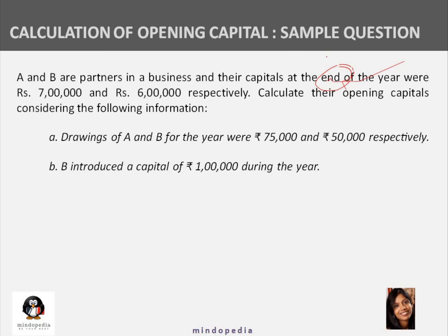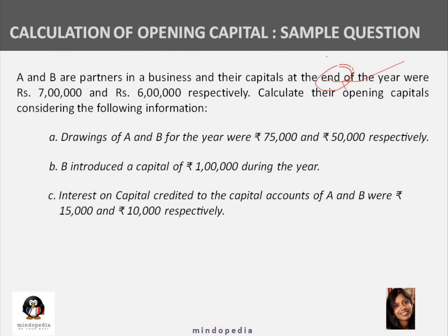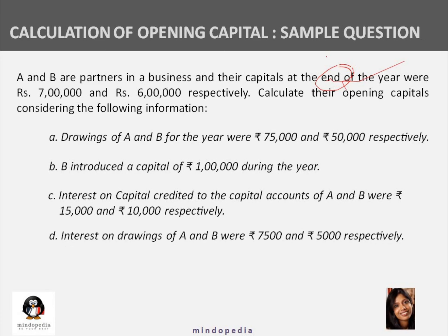Interest on capital was credited to their capital accounts — meaning it increased their capital, so we will reduce it. Interest on drawings for A and B were 7,500 and 5,000 respectively — these appear on the debit side, so we will add them back. Both partners suffered a loss of 20,000 each, so that is also added back.